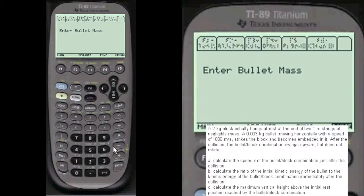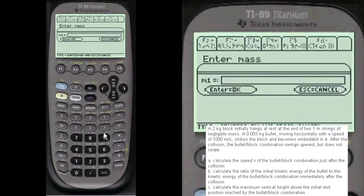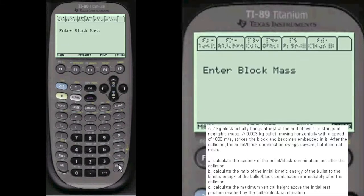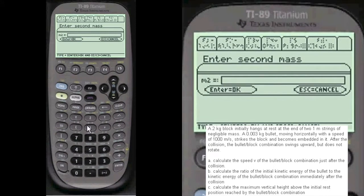And we're going to enter the mass of the bullet. We have to press alpha before you enter anything under these entry lines here. Alpha, given as 0.003 kilograms and the mass of the block is alpha 2 kilograms.